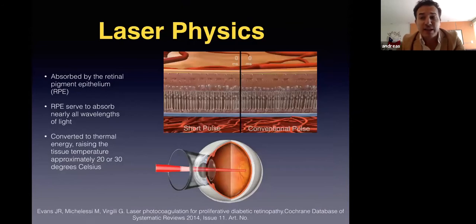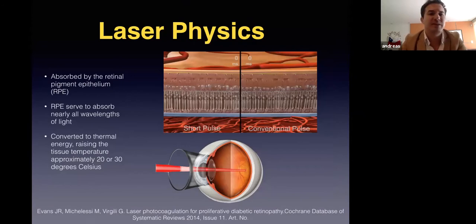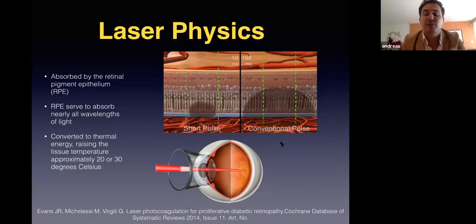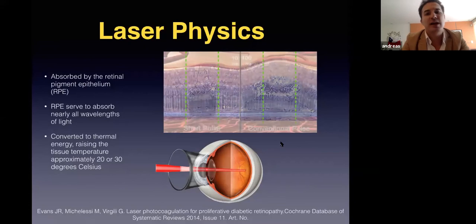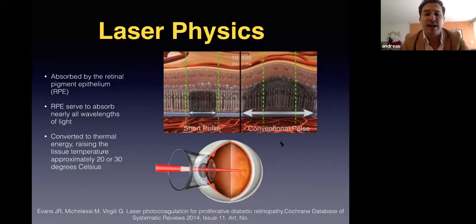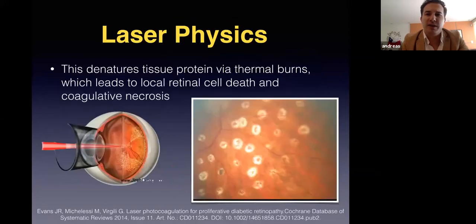It's very important to understand that when we are doing laser, we are actually creating a burn in the retina by converting energy to thermal energy, which increases the temperature inside the tissues. This video shows how the laser produces a thermal burn in the retinal layers. You can see two types: a short pulse laser with less retinal layer damage, and a conventional pulse. The histologic cuts show how burns produce damage to the internal retinal layers, leading to local retinal cell death and coagulative necrosis.